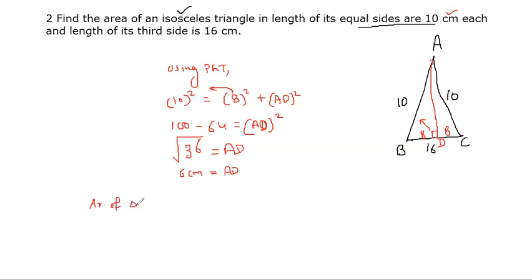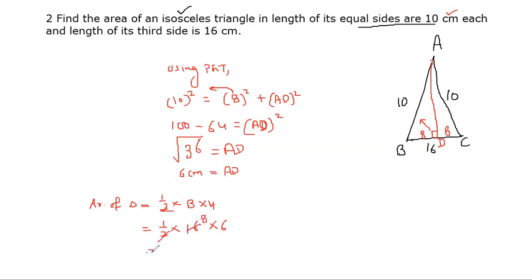Area of triangle equals half base into height. Base is 16 and height is 6. Half of 16 is 8, so 8 into 6 equals 48 cm². That is the area of the isosceles triangle.